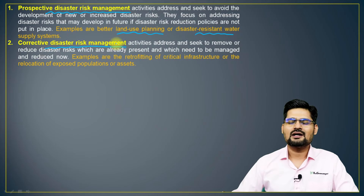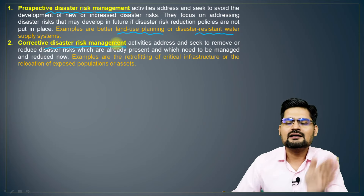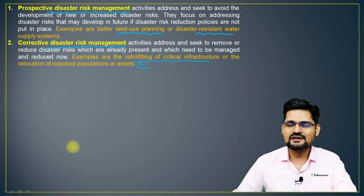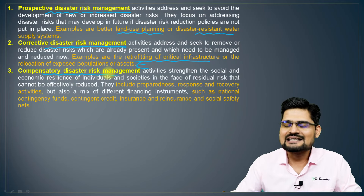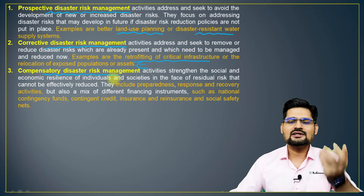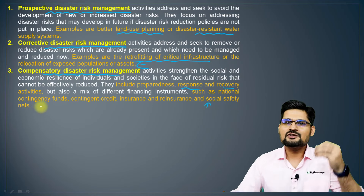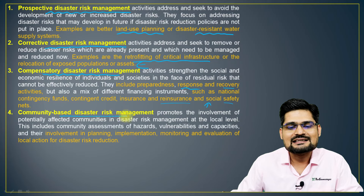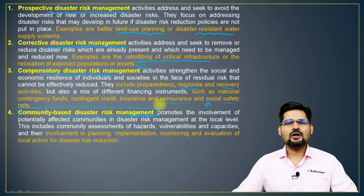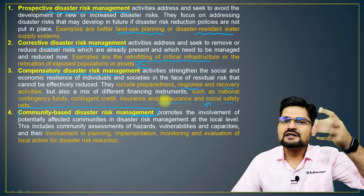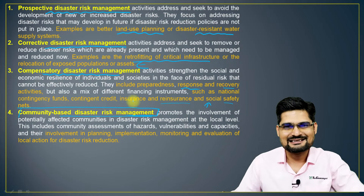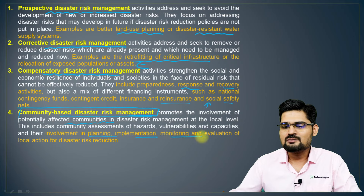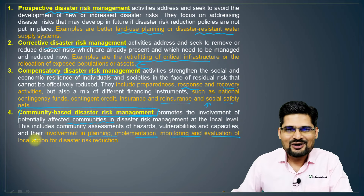Then we have corrective disaster risk management — if something has been done wrong, corrective measures are needed, such as retrofitting of critical infrastructure and relocation of population. Then there is compensatory disaster risk management — this includes preparedness, response, recovery, insurance, reinsurance and social safety nets. Community-based disaster risk management is also very popular, because communities with greater perception of their own risks associated with localized hazards are better able to cope. We need to look into affected communities and use planning, implementation, monitoring and evaluation using indigenous technologies and knowledge.